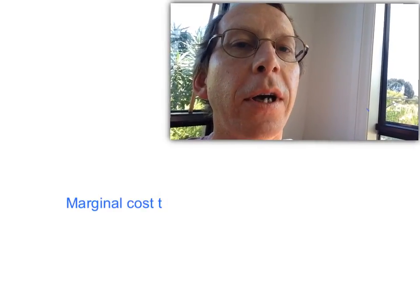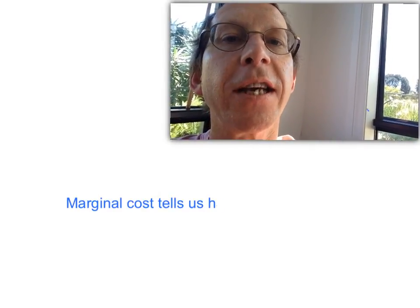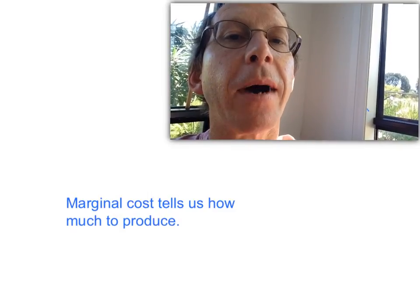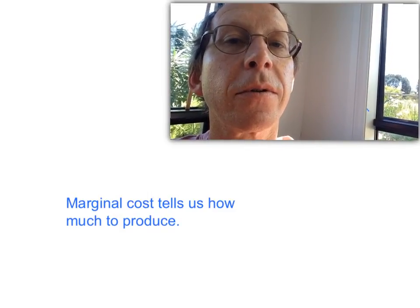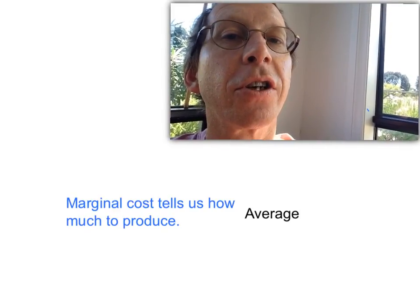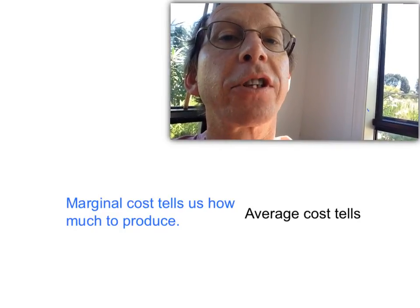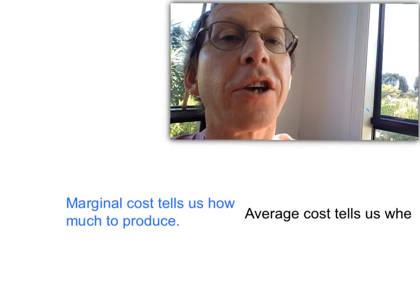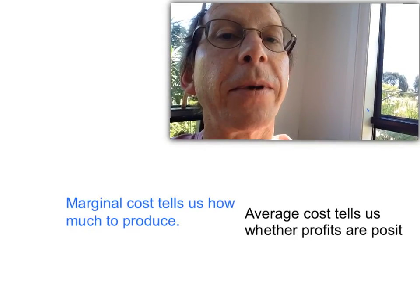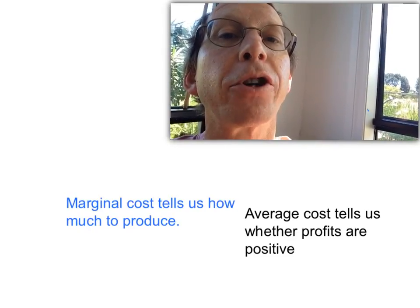So what are the takeaways from this video? We've got two key ones. First, marginal cost together with marginal revenue tells us the quantity that maximises profit — the quantity where marginal revenue equals marginal cost. Second, the relationship between price and average cost at the profit-maximising quantity tells us whether the firm is making a profit or a loss. So marginal cost tells us how much to produce, and average cost tells us whether the business is making a profit or a loss at that level of output.